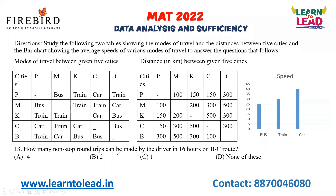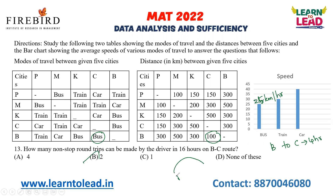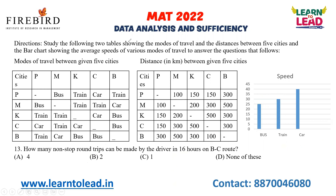How many non-stop round trips can be made by the driver in 16 hours on the B to C route? B to C by bus: distance is 100 km, speed of bus is 25 km/h, so one way takes 4 hours. In 16 hours, the number of non-stop round trips is 2. One round trip is B to C and back to B; two such round trips can be completed.